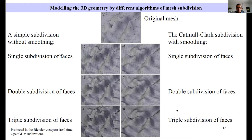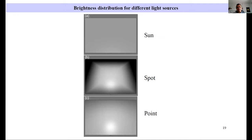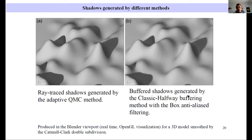Now, here you can see brightness characteristics of three main types of light sources in Blender. They're called sun, spot, and point. This is two types of shadows generated in Blender. First type: ray traced shadows generated by the adaptive Monte Carlo, quasi Monte Carlo method. And the second type: shadows generated by the classic halfway buffer.